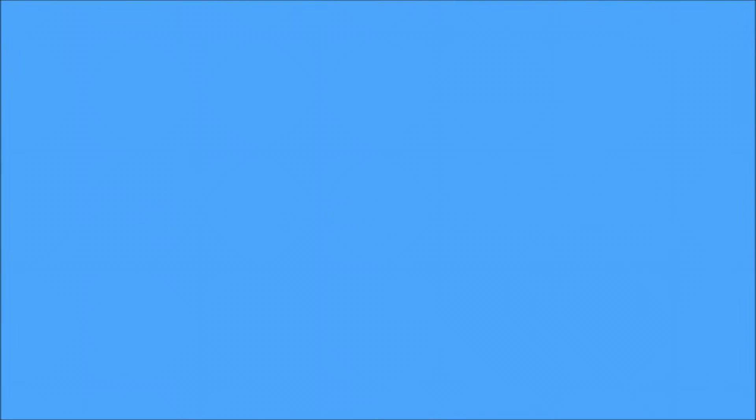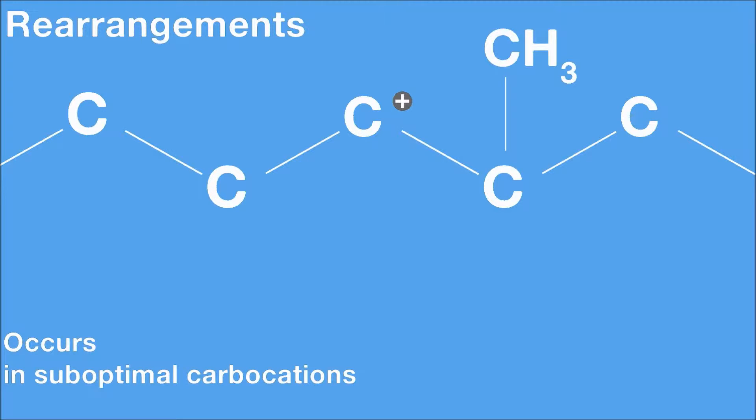Sometimes the carbocation form isn't as stable as it could be. Carbocation rearrangements are also a consequence of the intermediate, and a possibility when the leaving group occupies a less than optimal position.